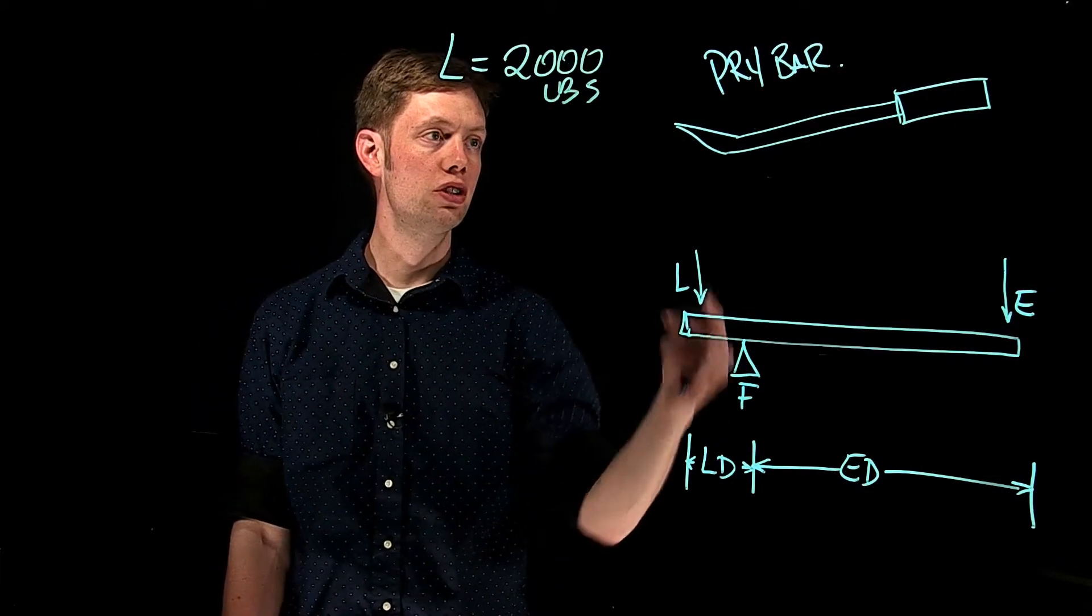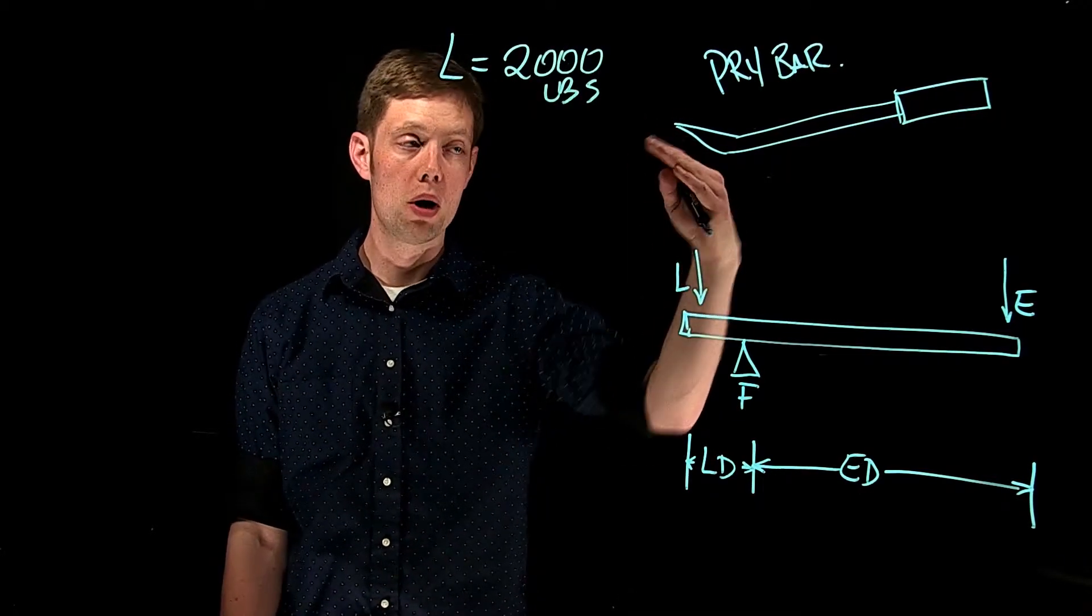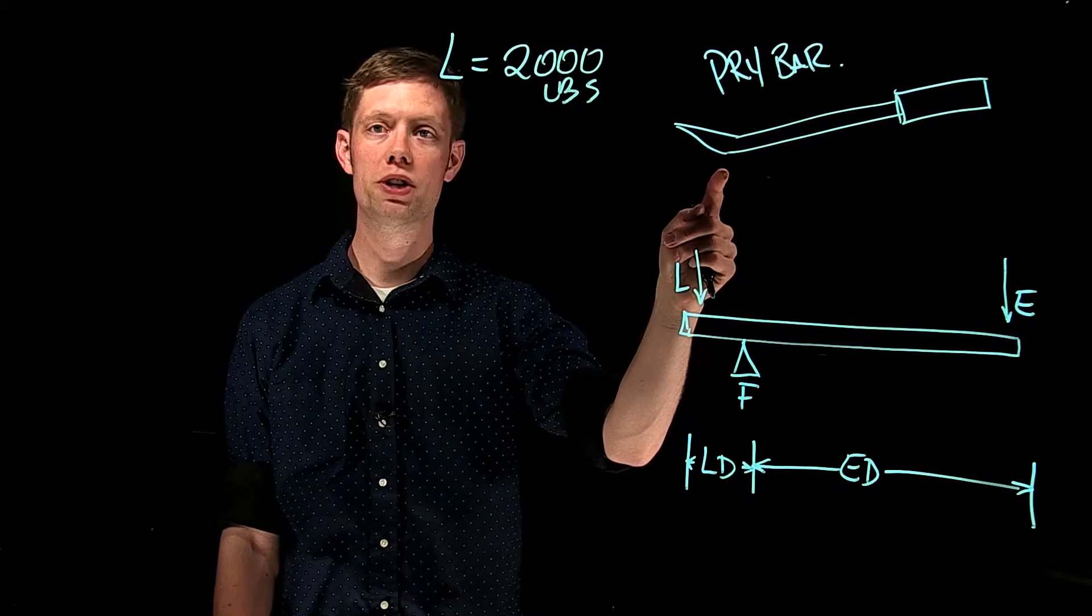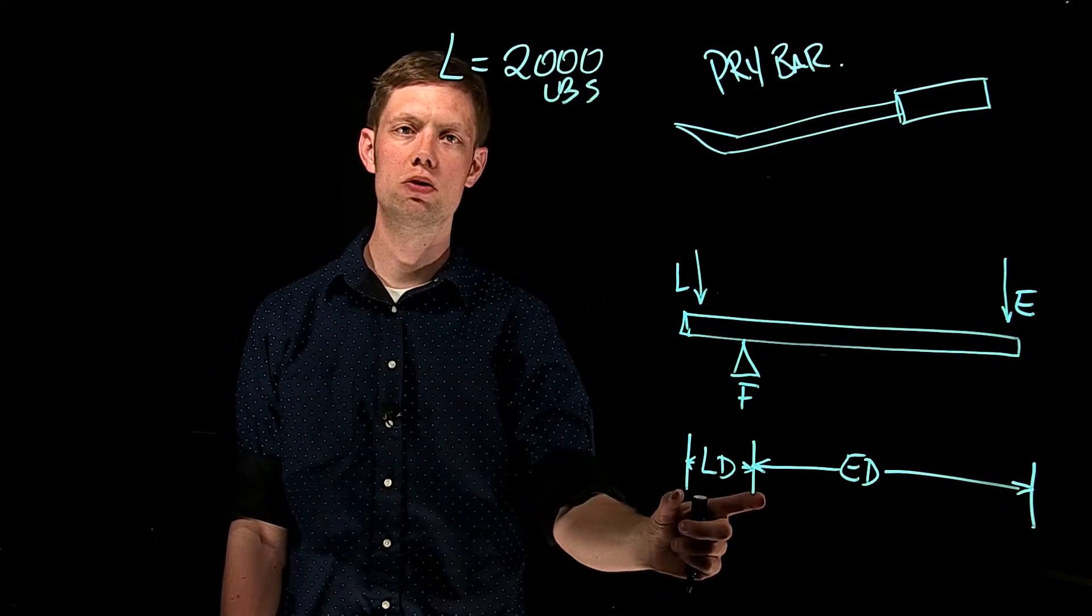It says in the question, the distance from the tip of the pry bar to the fulcrum, or the point at which the pry bar rotates, is 1.4 inches. We call that our load distance.